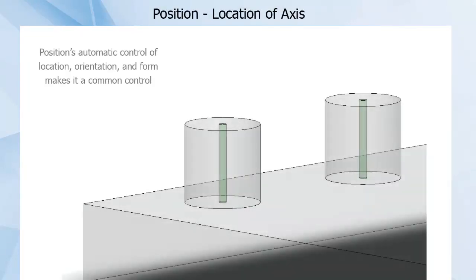This automatic control of location, orientation, and form through a single control is one reason position is one of the most common symbols used.